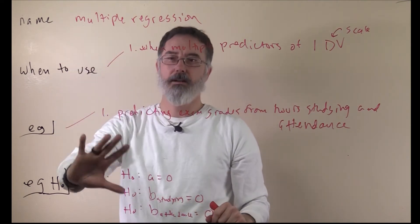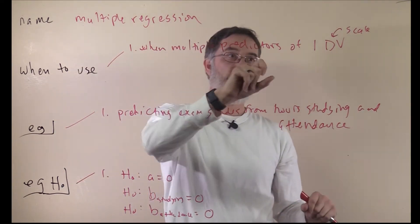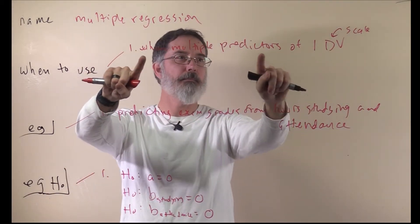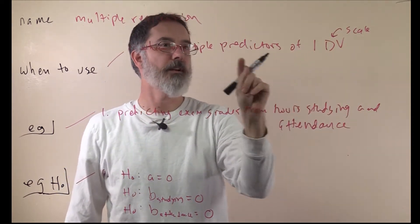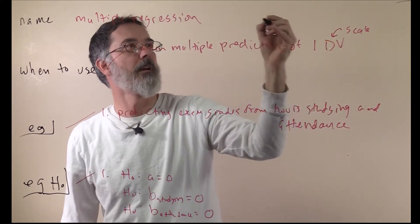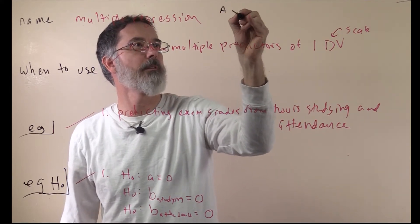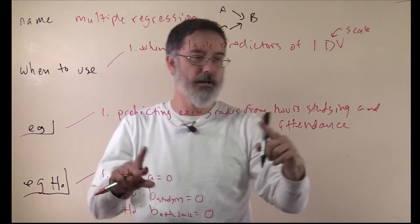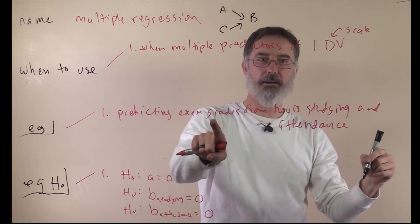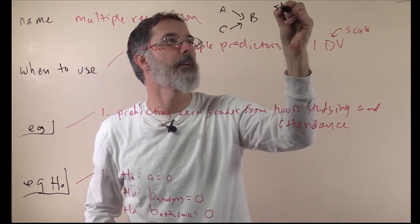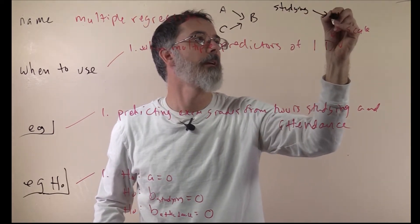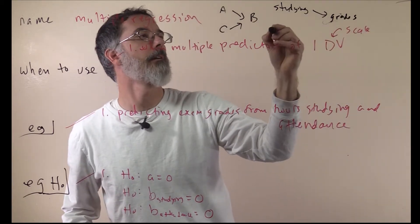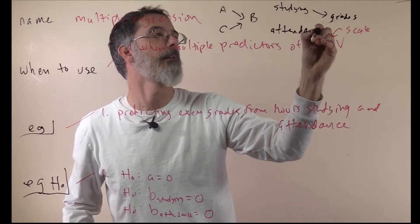This is one context where you would use multiple regression — when you have multiple predictors and you are trying to predict one outcome variable. Statisticians draw this relationship where multiple predictors point to one outcome variable. In our case, we are predicting grades from studying and attendance: studying predicting grades, and attendance predicting grades. Here you have multiple predictors predicting the one outcome variable.